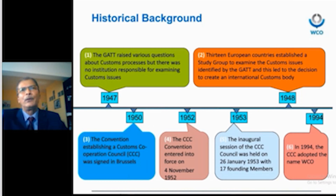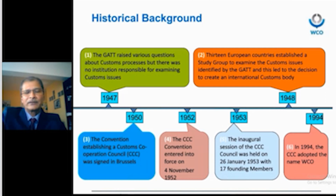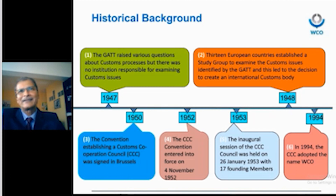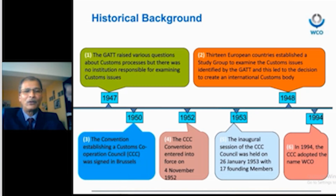The group was also required to study methods and procedures within which a value definition could be applied. In 1947 we have the GATT, and the creation of the study group. In 1950, the convention establishing a Customs Cooperation Council was signed in Brussels. The convention entered into force on 4 November 1952. In 1953, we had the first inaugural session of the Customs Cooperation Council, held on 26 January. Every year we celebrate this day as International Customs Day. It was opened with 17 founding members. In 1950, two other conventions were also signed: the convention on valuation for customs purposes and one on classification.